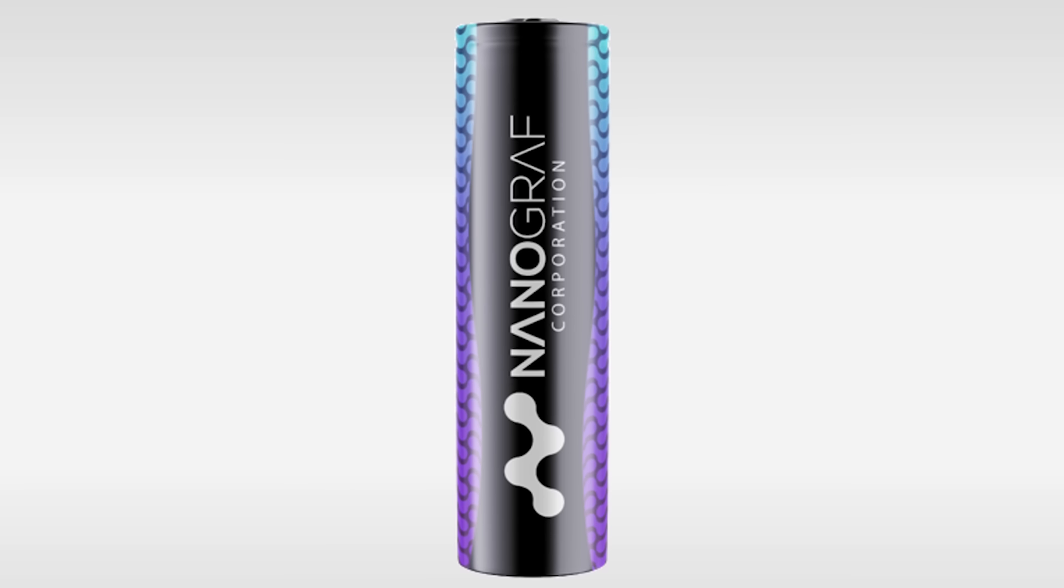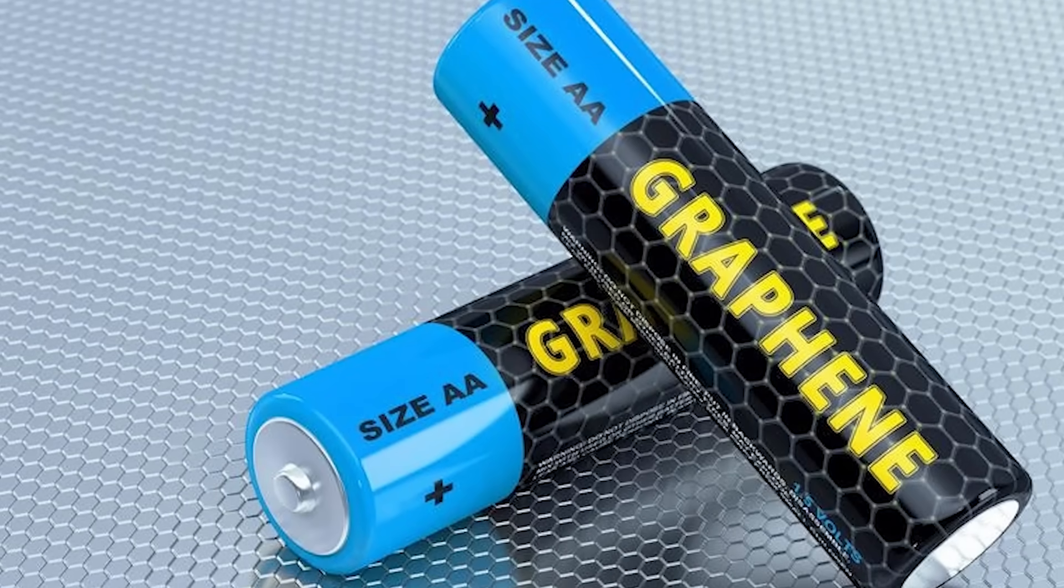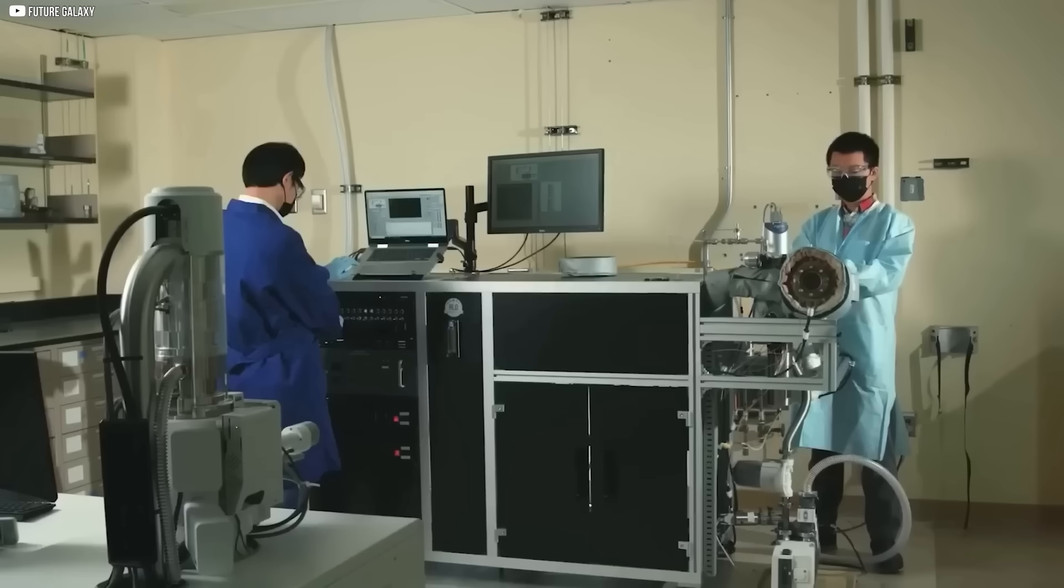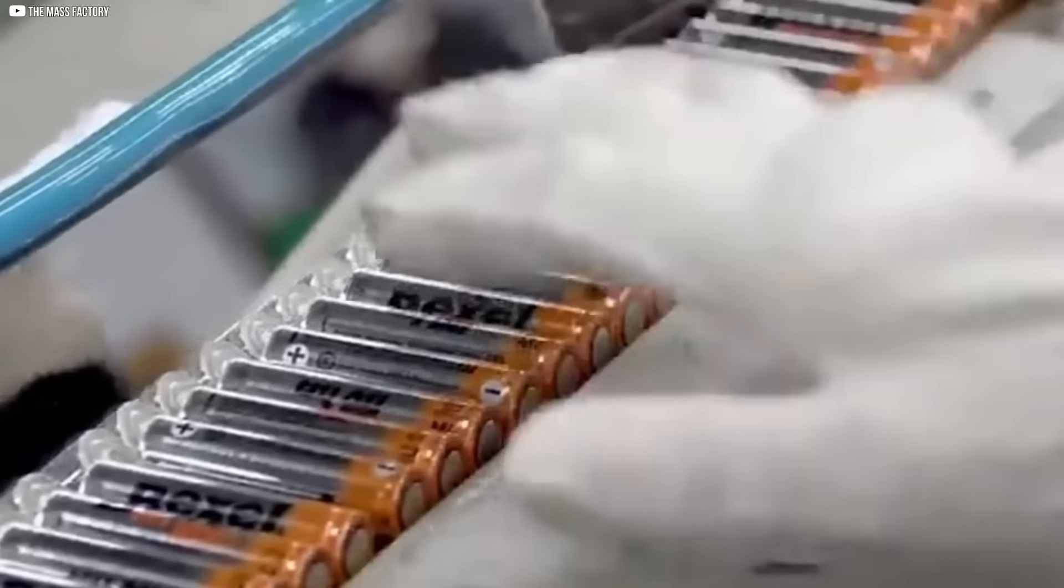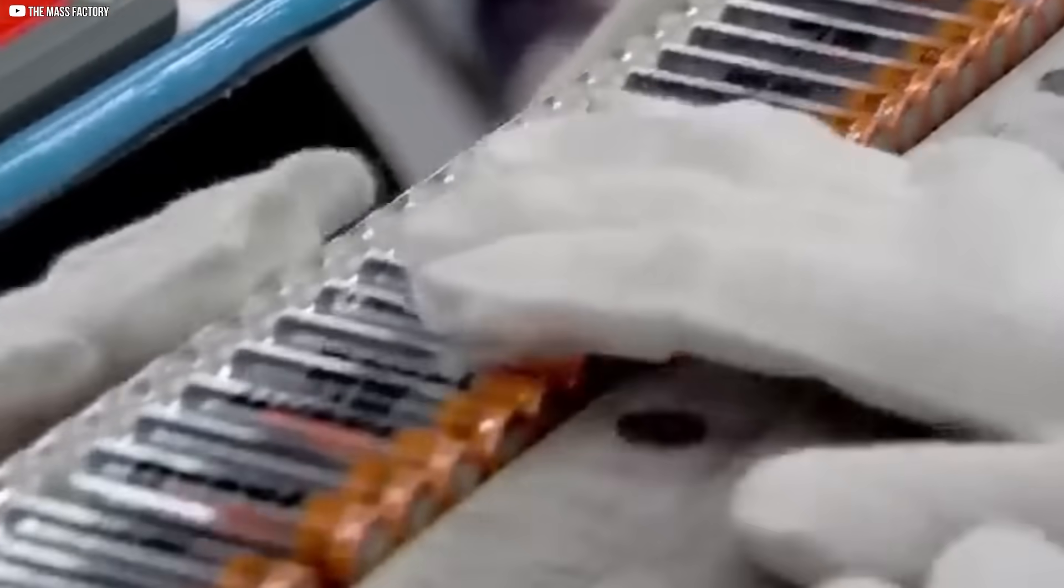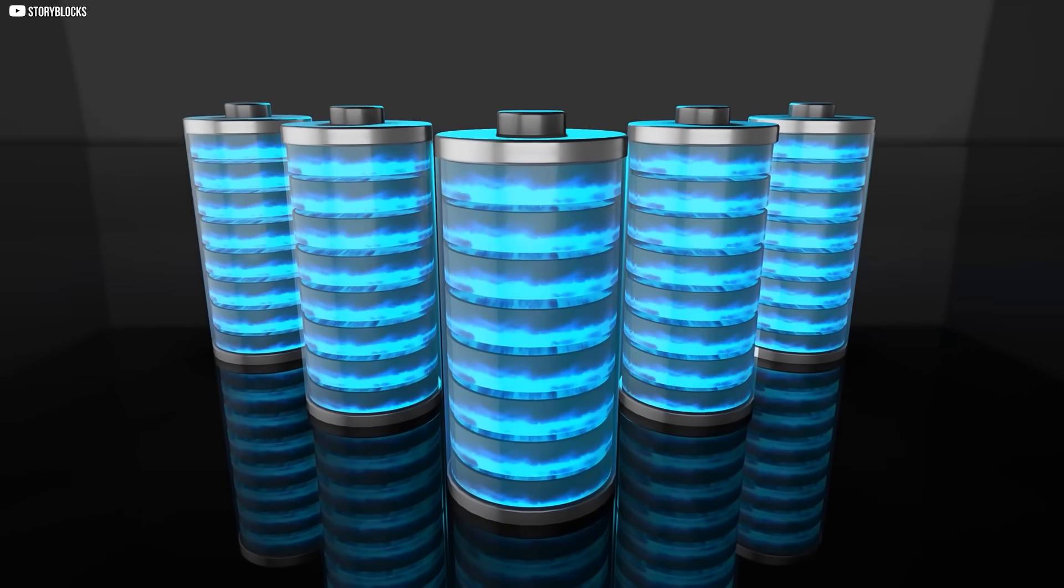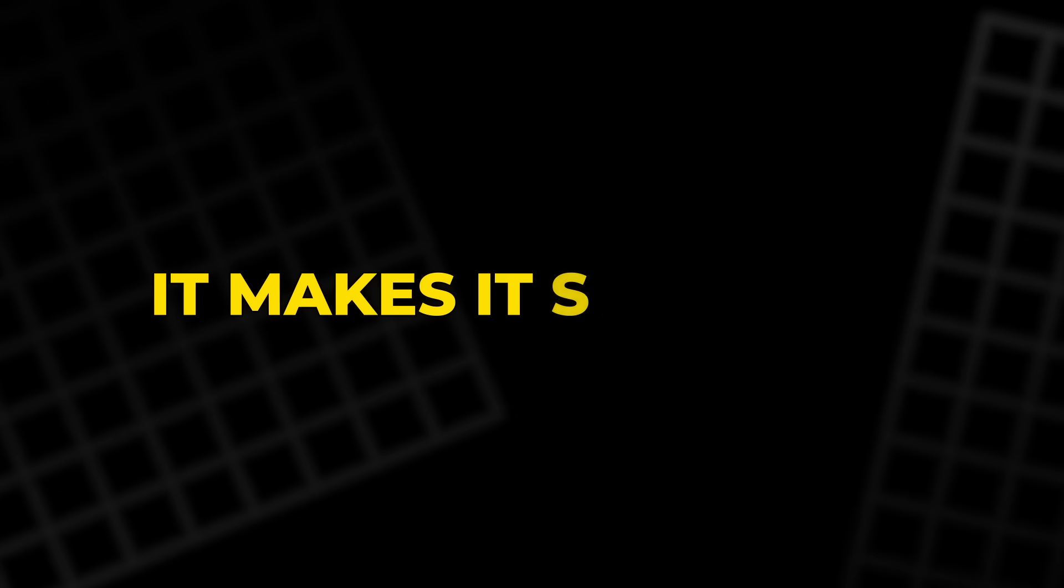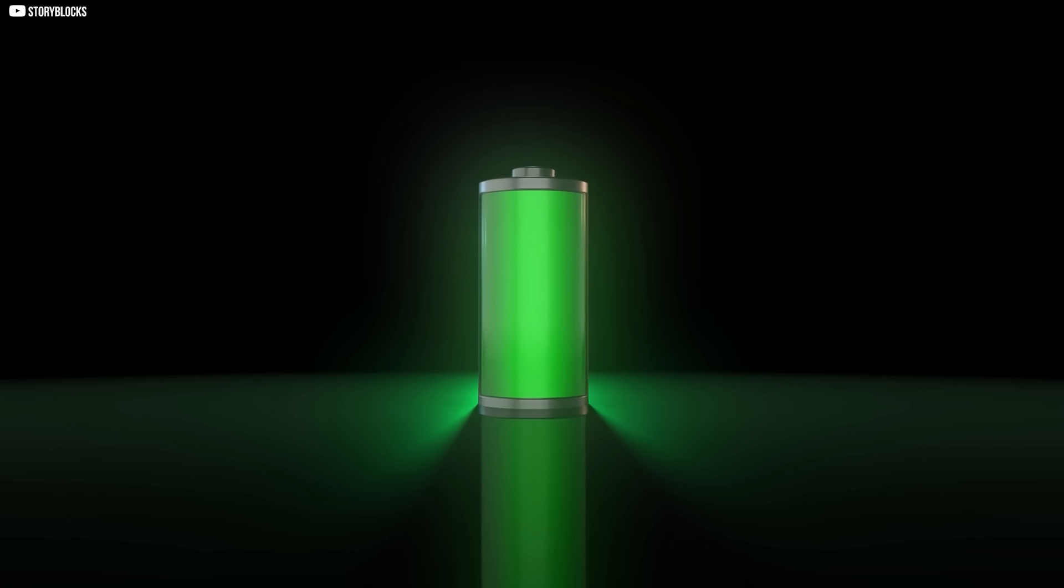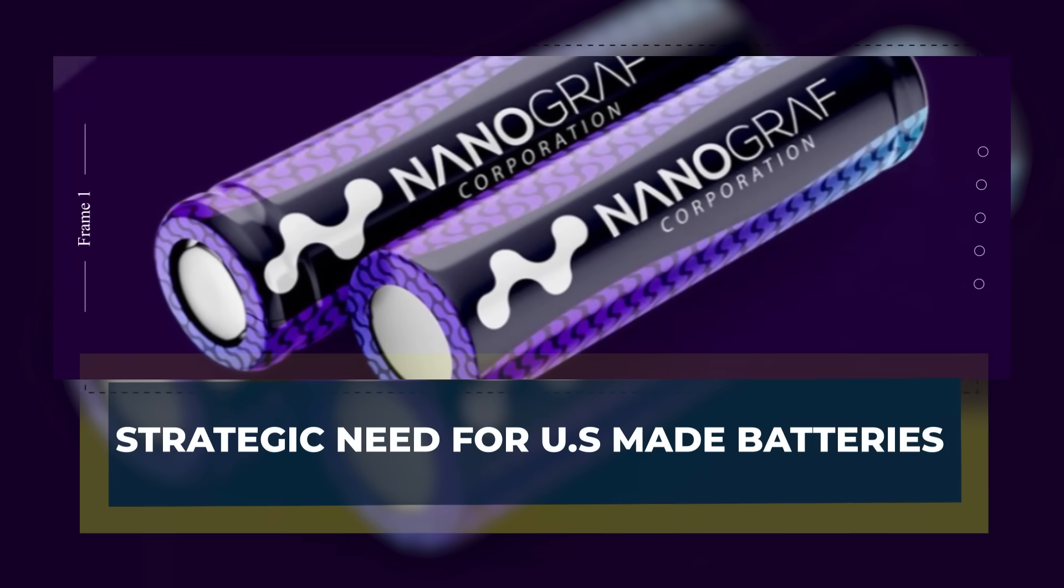Nanograph answered that call. They're based in Chicago. Their materials don't require rare earth imports. Their process is American from start to finish. This isn't just about building a better battery. It's about making sure the power stays in the right hands. And that makes this technology more than useful. It makes it strategic. Because in today's world, energy is its own kind of weapon.